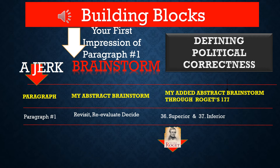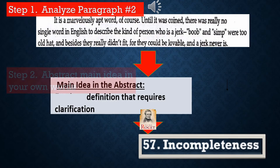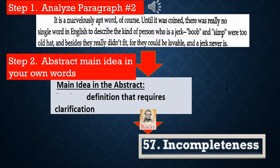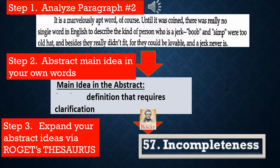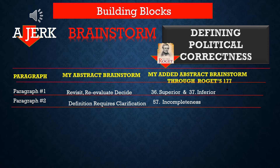So we're creating abstracts to brainstorm and adding them in charts throughout this building block process. Following the pattern and analyzing paragraph 2, I came up with my main idea from paragraph 2, which is talking about the definition of the term jerk and that it requires clarification. You may come up with something totally different. In step 3, following the pattern, I went into Roger's Thesaurus and came up with number 57, incompleteness, as if there was an incomplete definition. We want to keep the numbers of Roger's Thesaurus together with the concepts you are recording as similar, because we're going to use those numbers as we move on in this next building block.